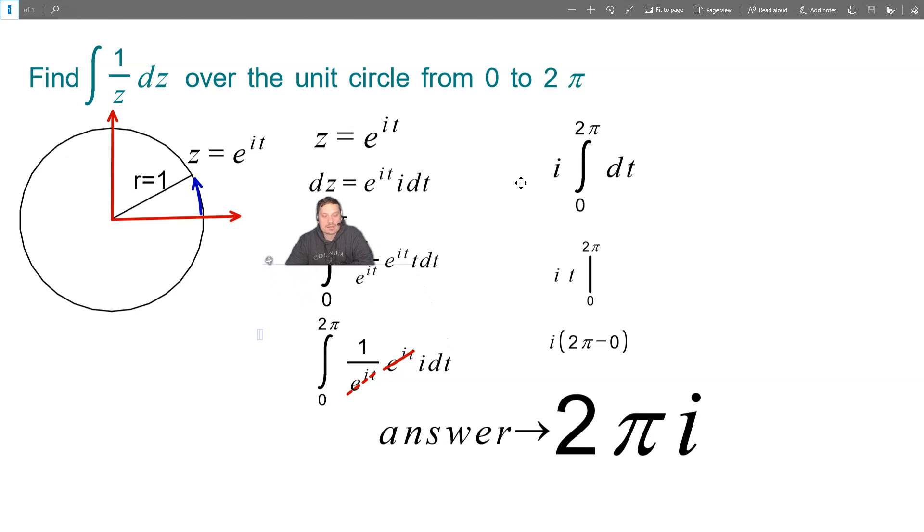And also the dz that you see here can be replaced with e to the i t times i dt. So that comes onto this position right here. So what I've done is I've converted to t as my variable, away from z, so to speak.